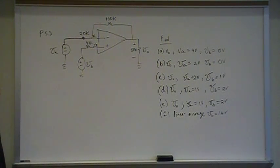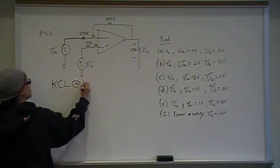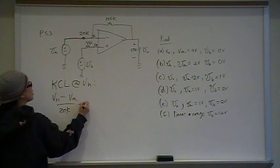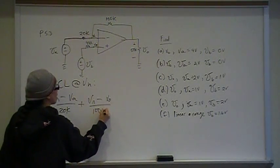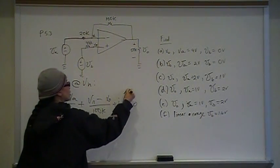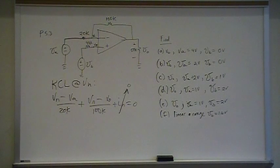We could go through and do nodal voltage and solve all of these individually, but the easier thing to do is to find a relationship between Vout and VA and VB and then just plug in those values. So that's what we're going to do. Let's take KCL at VN. So KCL at VN gives me VN minus VA over 20k plus VN minus Vout over 100k plus IN equals 0. IN is 0.